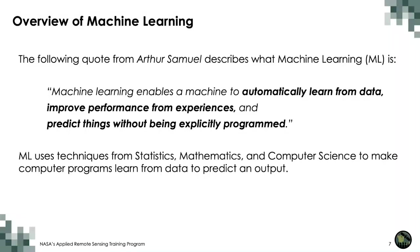In 1959, Arthur Samuel introduced the concept of machine learning with the following quote: machine learning enables the machine to automatically learn from data, improve performance from experiences, and predict things without being explicitly programmed. Machine learning can be understood as computational methods that use experience to improve performance or make accurate predictions. In this case, experience refers to past information or data available to us. The quality and amount of data will be crucial to the accuracy of predictions.